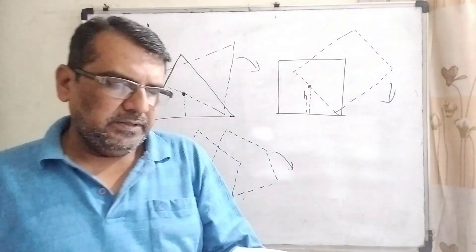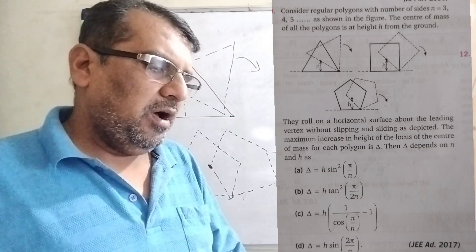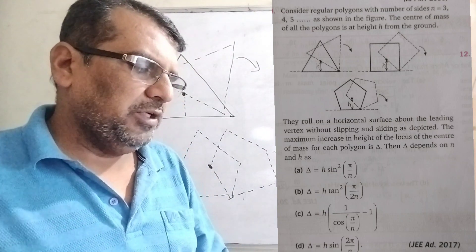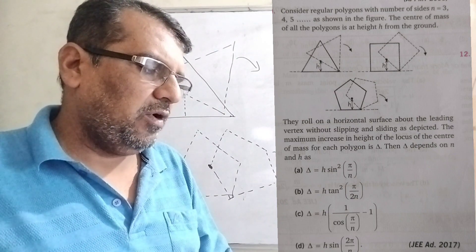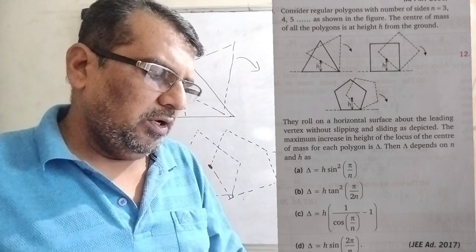The question says: consider regular polygon with number of sides n = 3, 4, 5 as shown in the figure. The center of mass of all the polygons is at height h from the ground. They roll on a horizontal surface about the leading vertex without slipping and sliding as depicted.